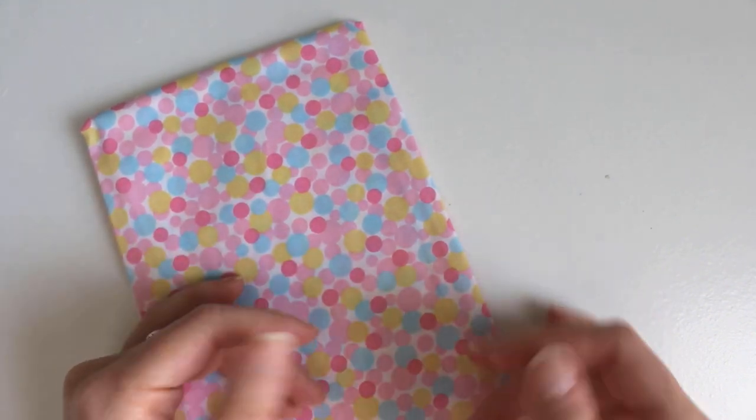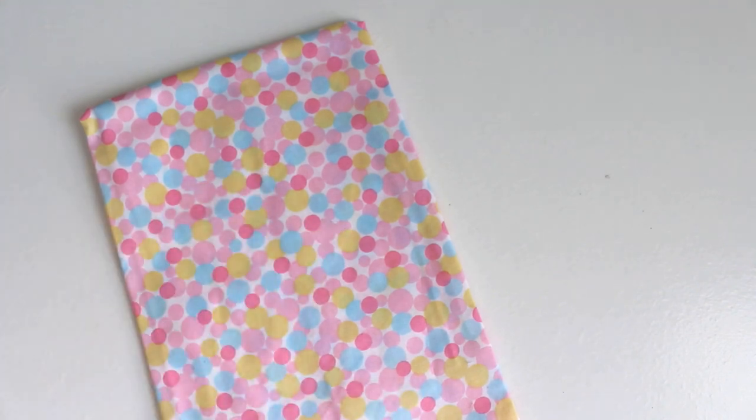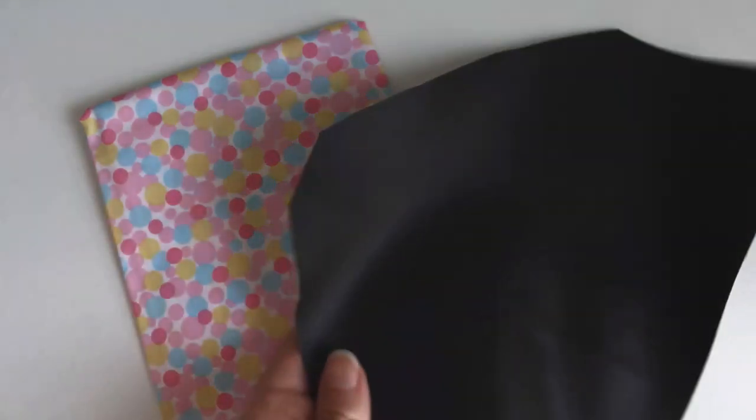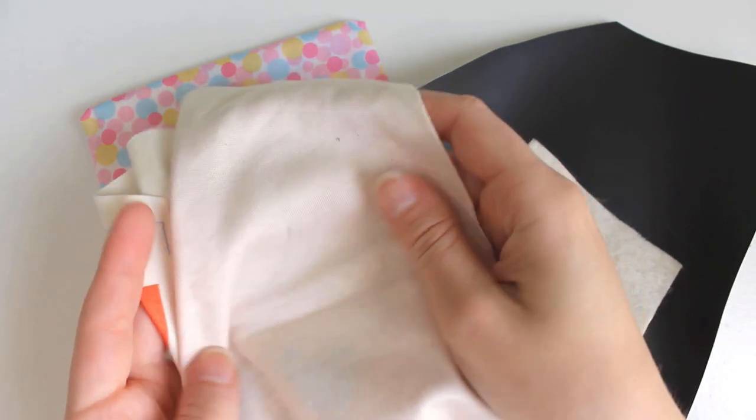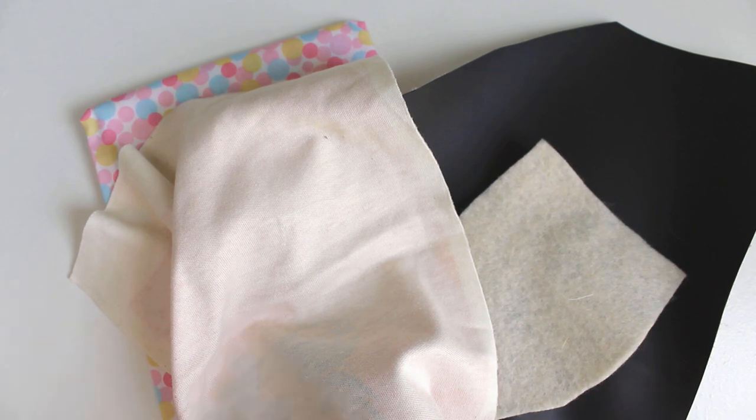Woven fabrics, like this cotton, are probably your biggest sewing staple. Then there are nonwoven fabrics, such as vinyl and felt. Then thirdly, there are knit fabrics, such as this jersey, which is commonly used for t-shirts.